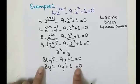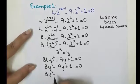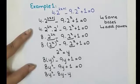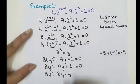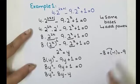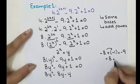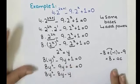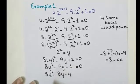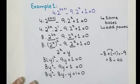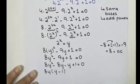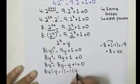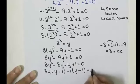We solve 8y^2 - 9y + 1 = 0 by factorization. We split the middle term as -8y - y, since -8 + (-1) = -9 (giving us B) and (-8)×(-1) = 8 (giving us AC). So we write 8y^2 - 8y - y + 1 = 0. Taking 8y common from the first two terms gives 8y(y - 1), and taking -1 common gives -1(y - 1) = 0.